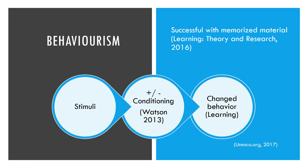Behaviorism says students learn passively through positive and negative conditioning in order to change our behaviors, such as through repetition. This is useful for all the anatomical terms and structures we need to memorize, and behaviorism is optimal for learning easily memorized content.